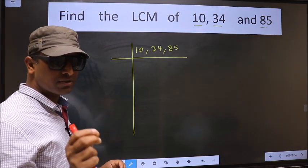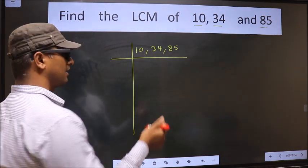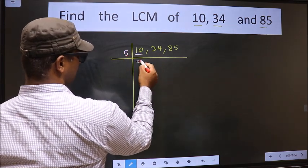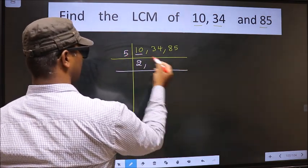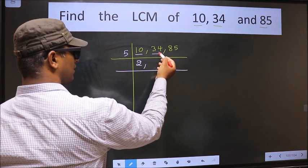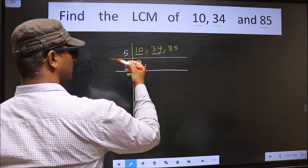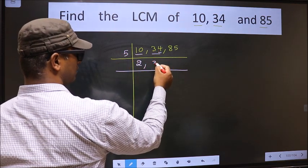Now we should focus on the first number, that is 10. 10 is divisible by 5. The other number 34, last digit neither 0 nor 5, so this number is not divisible by 5. So we write it down as it is.